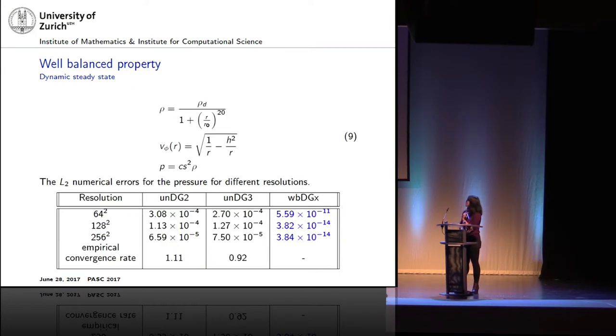Now looking at something which is a bit more complicated, this dynamic steady state that I described, here we assume a constant density profile with tapering off, and a sub-Keplerian velocity. And what you can see here is that it becomes harder to maintain this equilibrium if you have an unbalanced scheme. Whereas with the well-balanced scheme, you can still be very close to the steady state.